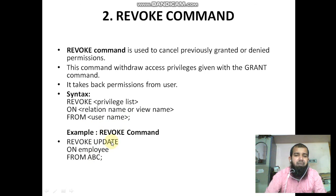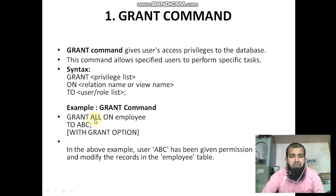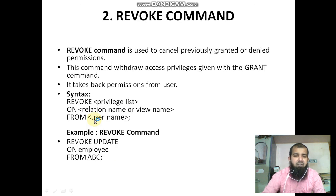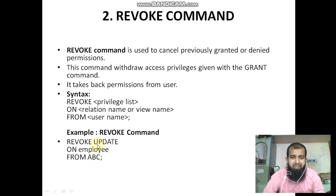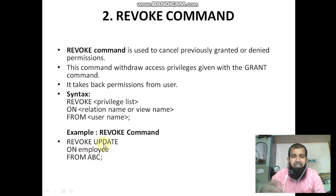The syntax is: REVOKE privilege_list ON relation_name or view_name FROM user_name. For example: REVOKE UPDATE ON employee FROM ABC. Previously, 'all' permissions were granted — including update, delete, everything. By using this revoke command, the user ABC can no longer update the employee table. Previously the permission was granted, but now it is being taken back — cancelled. He can still insert and delete, but he cannot update.